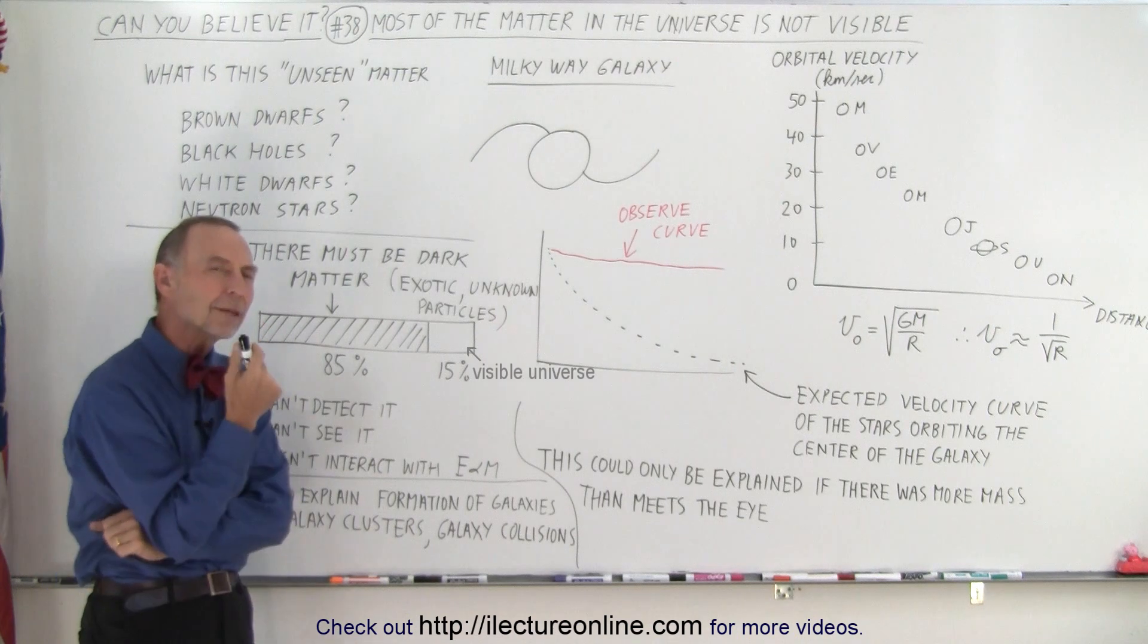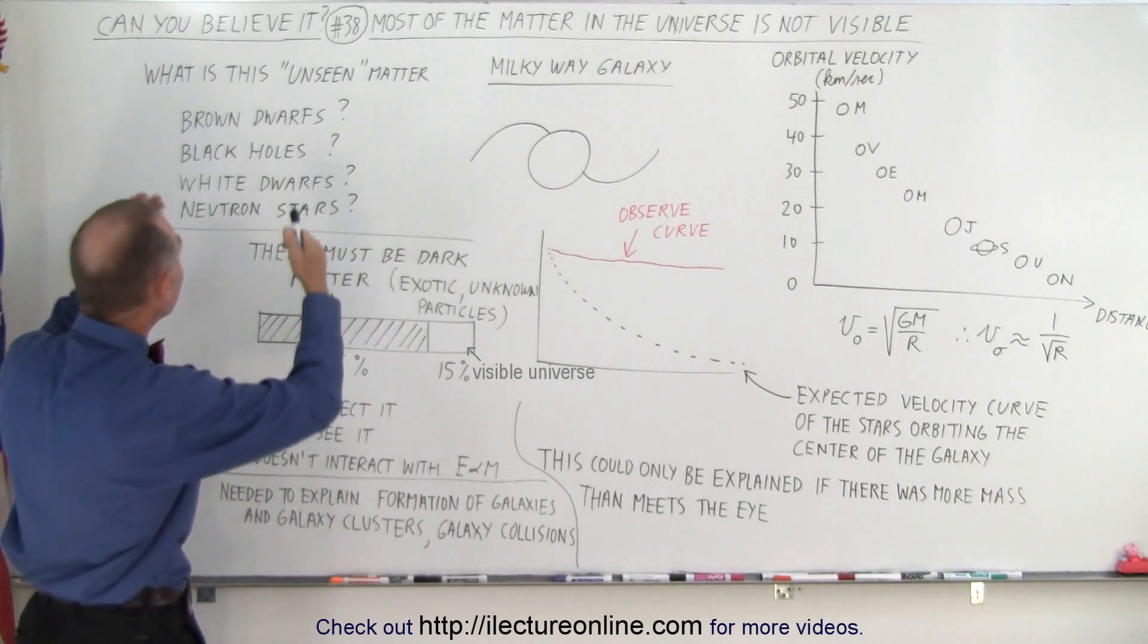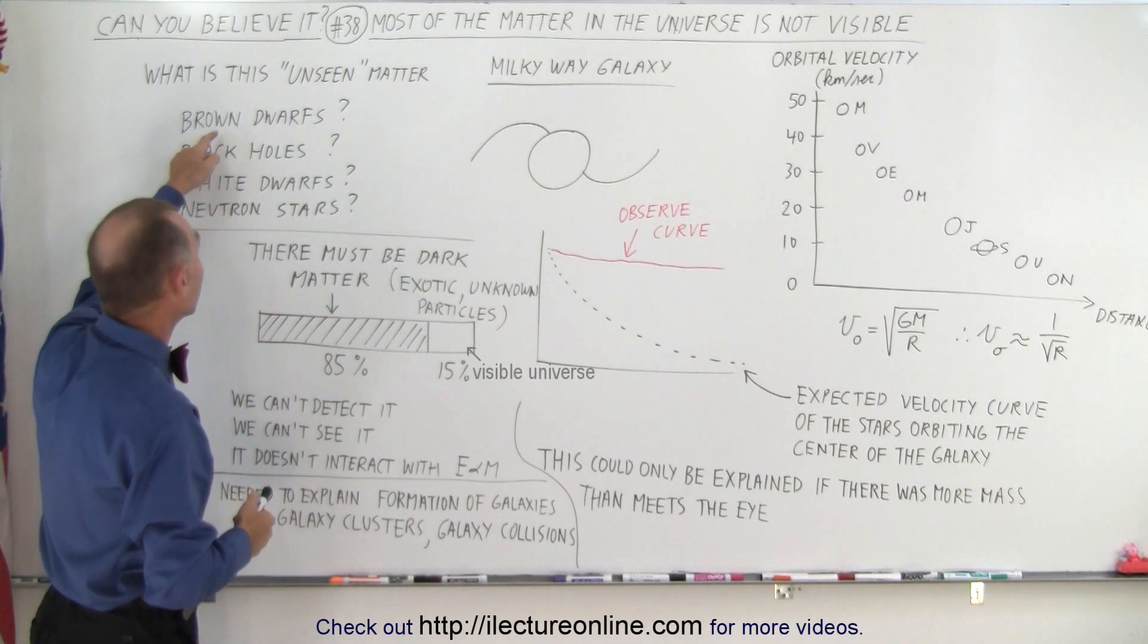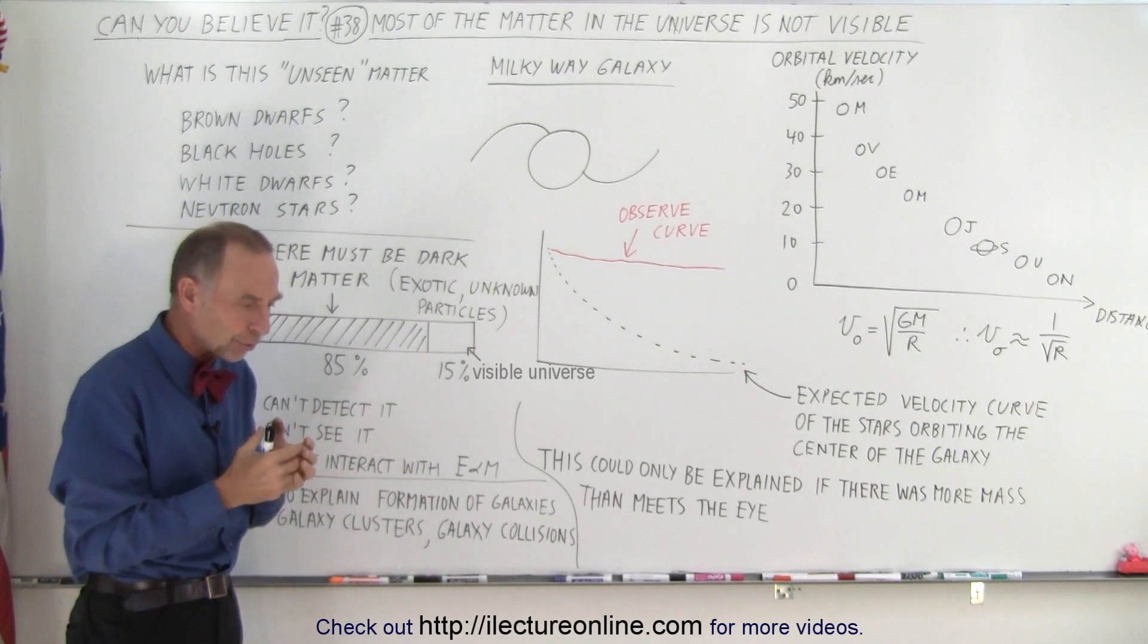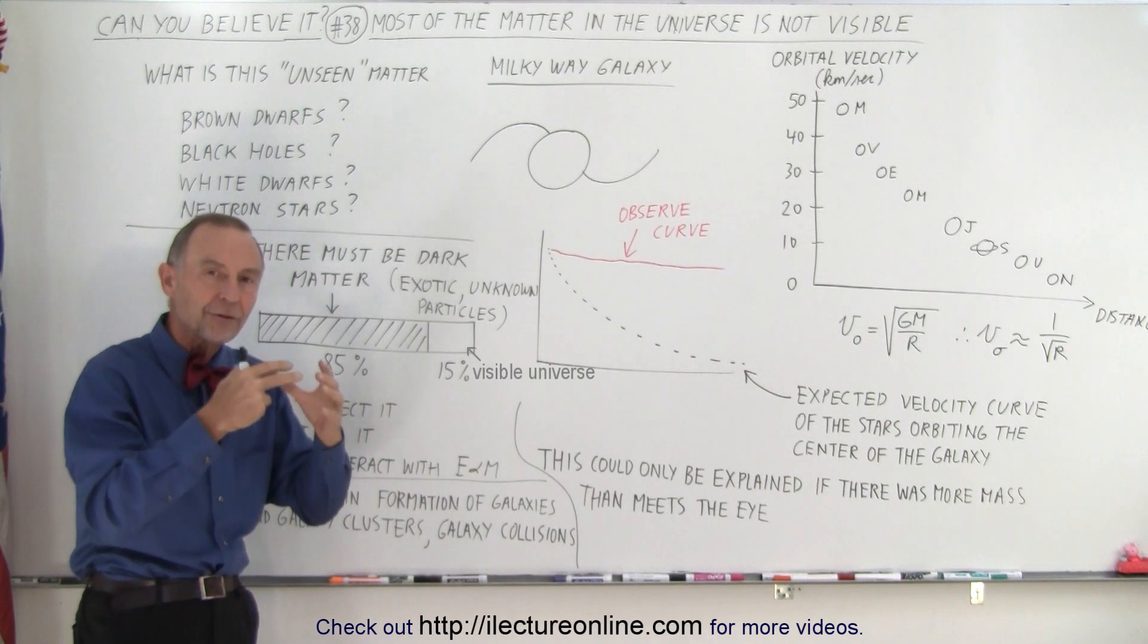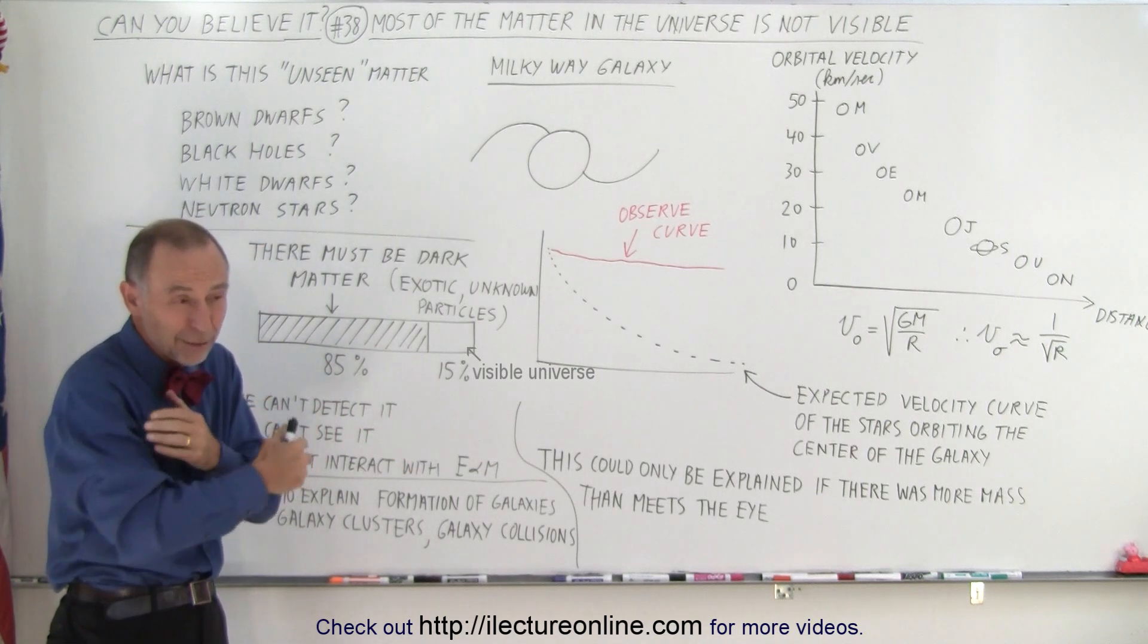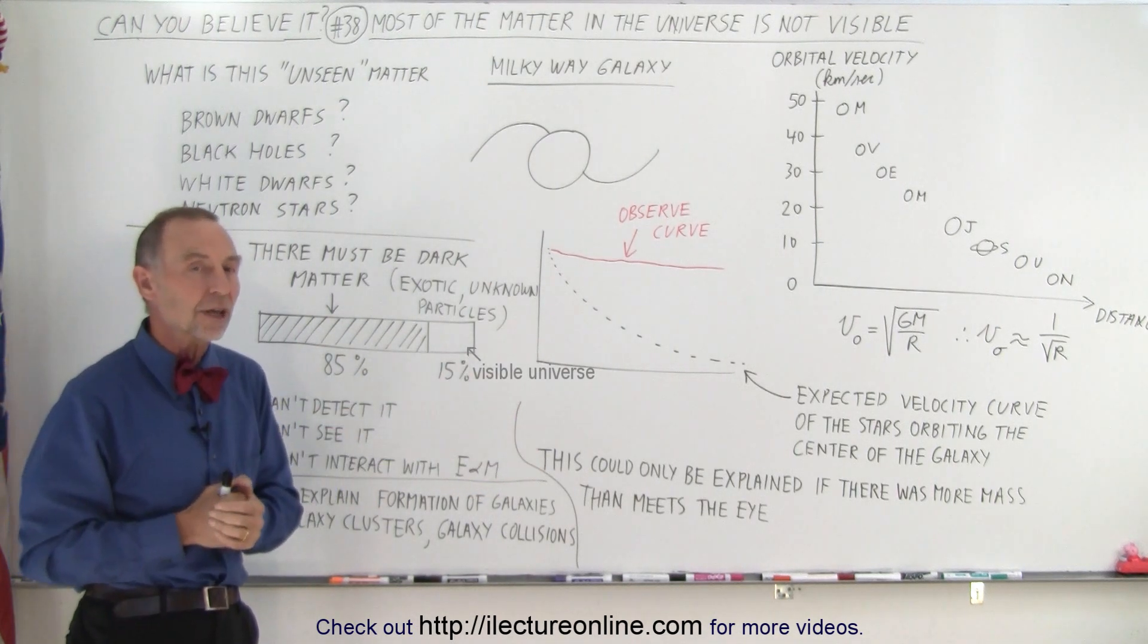So, what is that mass? Where is it? Well, for a while there, we thought it could potentially be things that are difficult to see. For example, maybe there are a lot of brown dwarfs, way more than we thought there were. Brown dwarfs are stars that never reach nuclear fusion, so they're not very bright, they're very difficult to see, and there may be just an enormous number of them, and we just don't realize they're there.